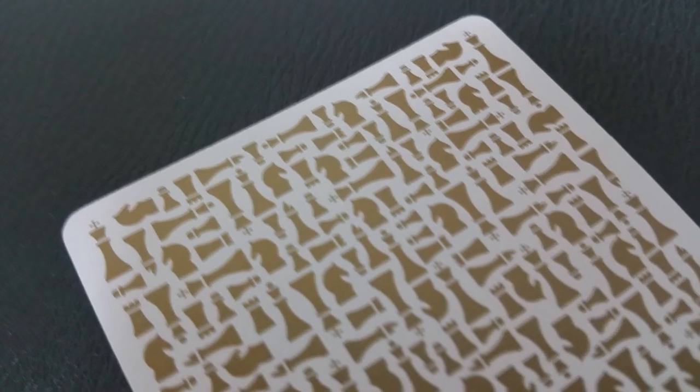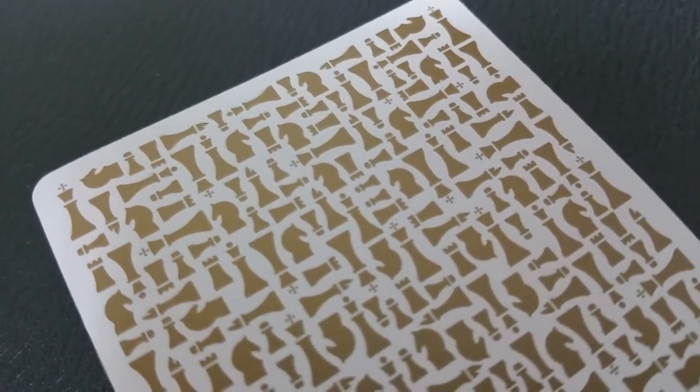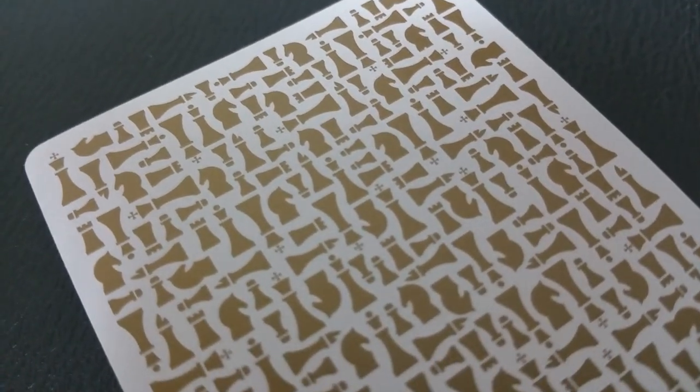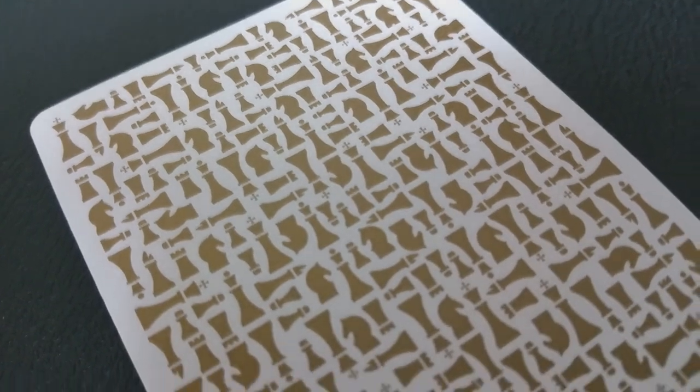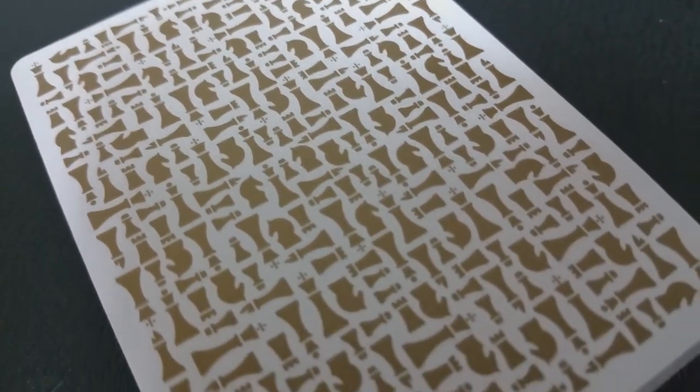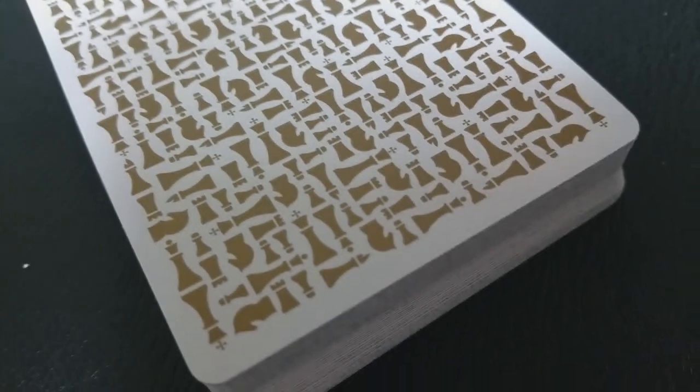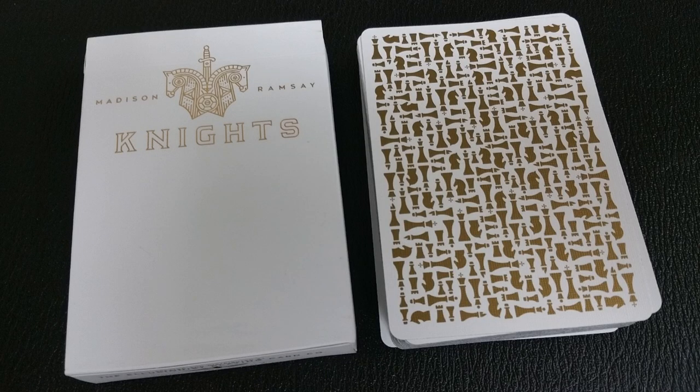The theme of this deck is Knights. So it's kind of a play off of Kings, originally the Peter McKinnon-Daniel Madison collaboration. Kings, of course, is a piece on the chessboard, and Knights are also a piece on the chessboard, so it's continuing that theme. But this one does have more of a chess theme, so you have the two Knight images there on the front, which is the horse, if you don't play chess, it's the horse, it's the horsey guy.